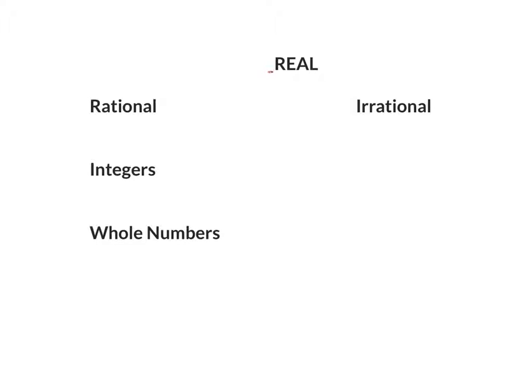Real numbers are broken down into two categories. One is rational, the other is irrational. Rational numbers are any numbers that you can write as a fraction. Numbers like two-thirds, four-fifths, even like five because you can write five as five over one, you know, ten over two. Anything you can write as a fraction is good.